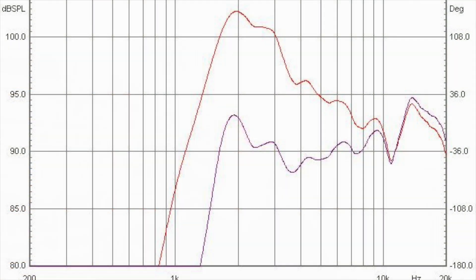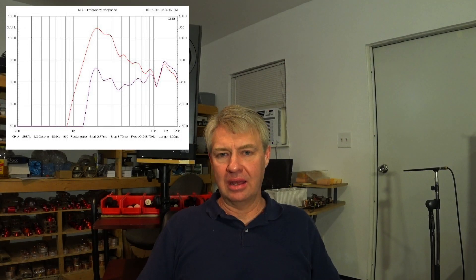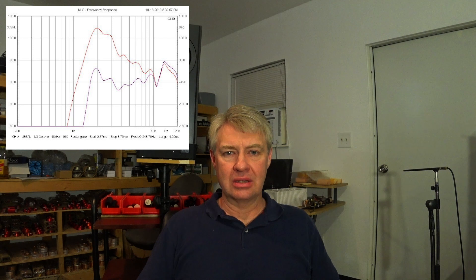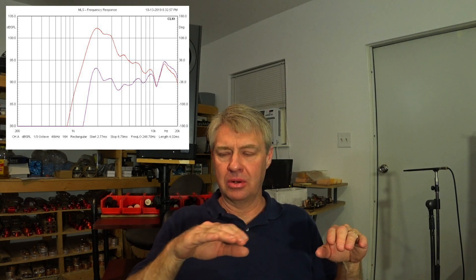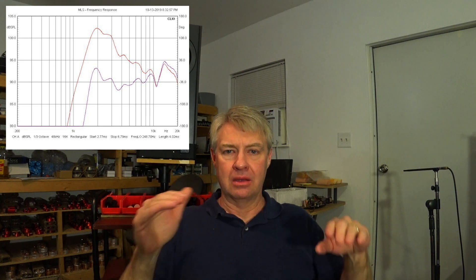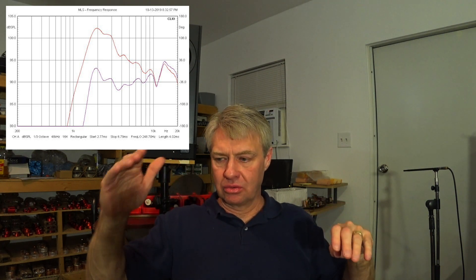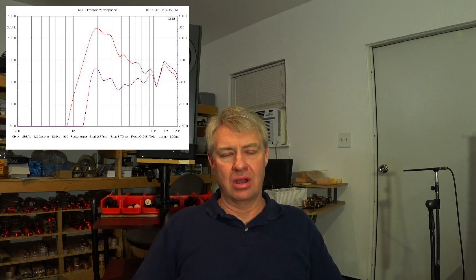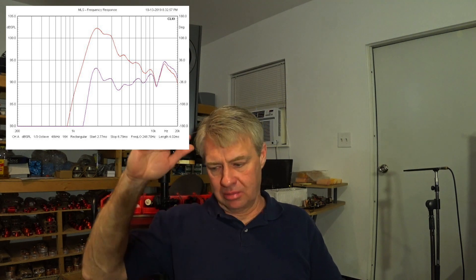So I put a first order filter on the tweeter and measured it — you can see it saved in purple on the screen. You can see it dropped the sensitivity and flattened out the response pretty nicely, but as it approaches that lower frequency range there's still a knee, still a peak there. It's not a smooth response. And then you'll notice the drop off at the end — it's like 48 dB per octave or something. It just drops like a rock.